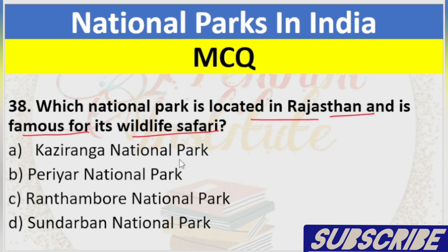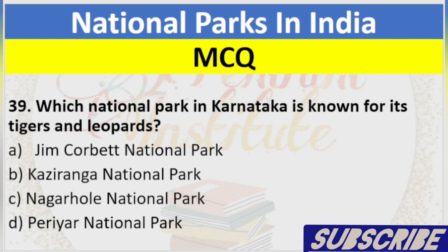Question 38: Which National Park is located in Rajasthan and is famous for its wildlife safari? A. Kaziranga National Park, B. Periyar National Park, C. Ranthambore National Park, D. Sundarbans National Park. Answer: C. Ranthambore National Park.